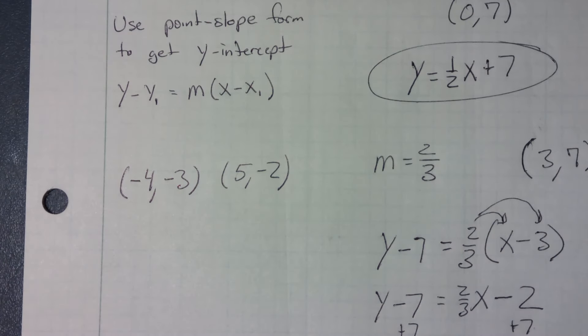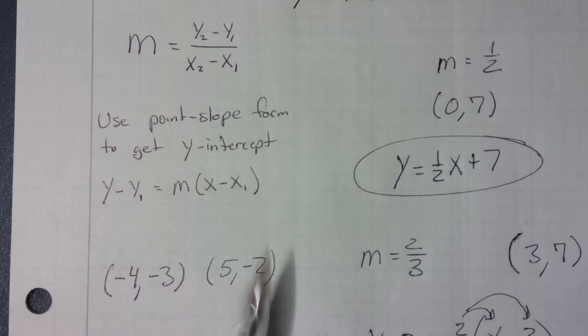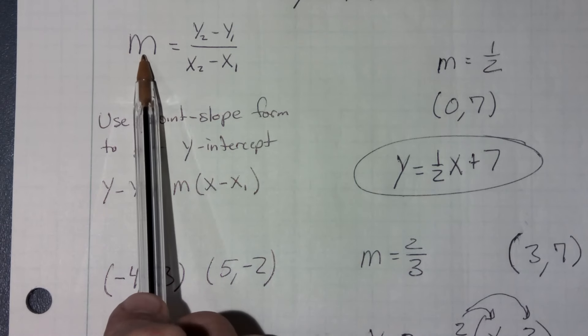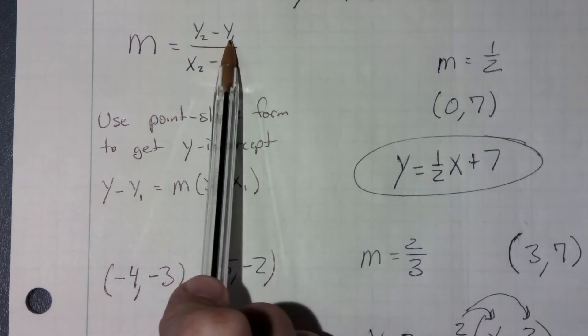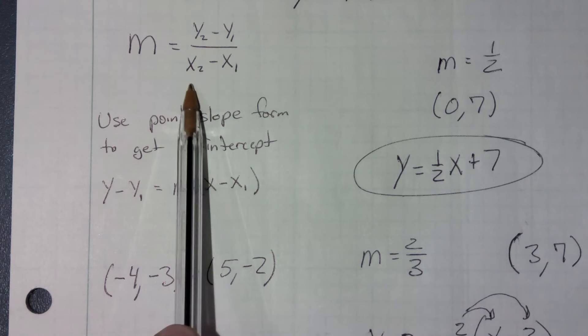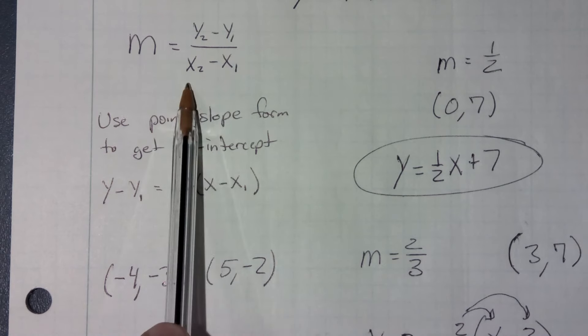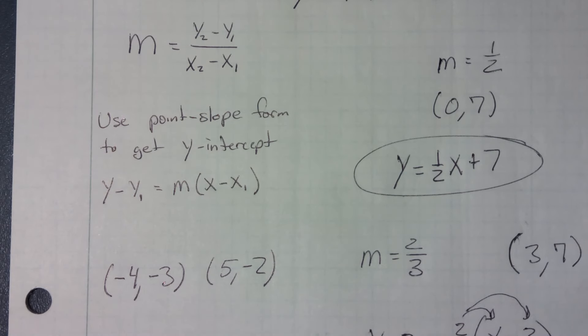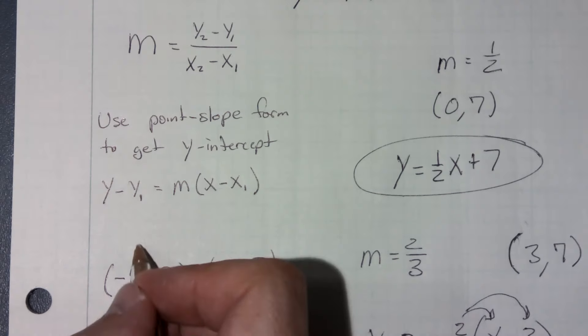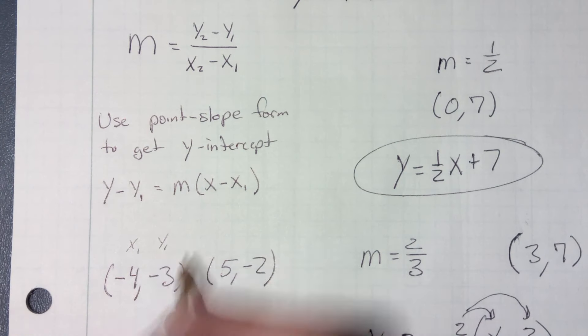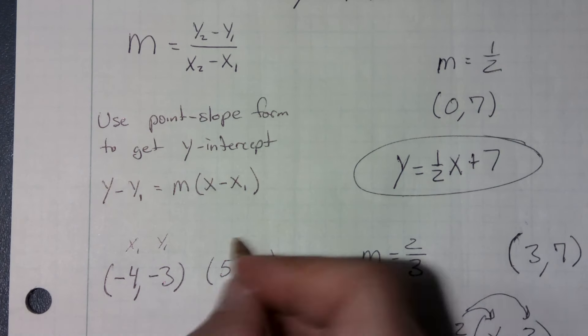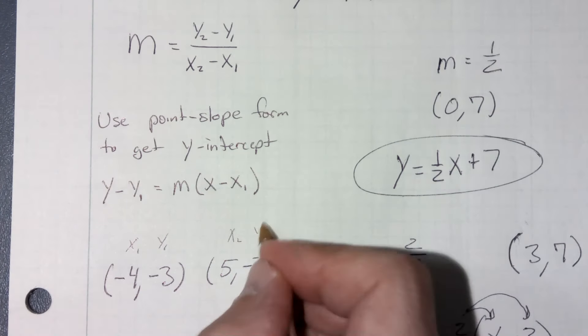But the first thing we're going to do is we're going to find the slope. Now remember, slope is rise, how much I go up, versus run, how much I go over. Or in other words, y2 minus y1 over x2 minus x1. So again, if you need to, I'm going to label this x1, y1. That's my first point. I'm going to label this x2, y2. There's my second point.